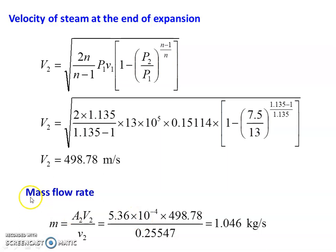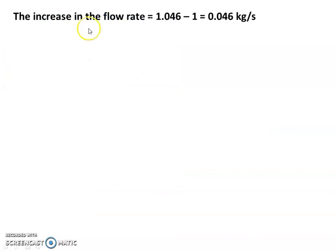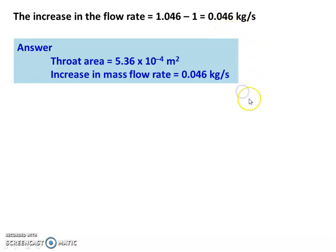For supersaturated flow, mass flow rate M = A2 × V2 / v2 = 5.36 × 10⁻⁴ × 498.78 / 0.25547 = 1.046 kg/s. Increase in flow rate = 1.046 - 1.0 = 0.046 kg/s. Throat area = 5.36 × 10⁻⁴ m² and increase in mass flow rate = 0.046 kg/s.